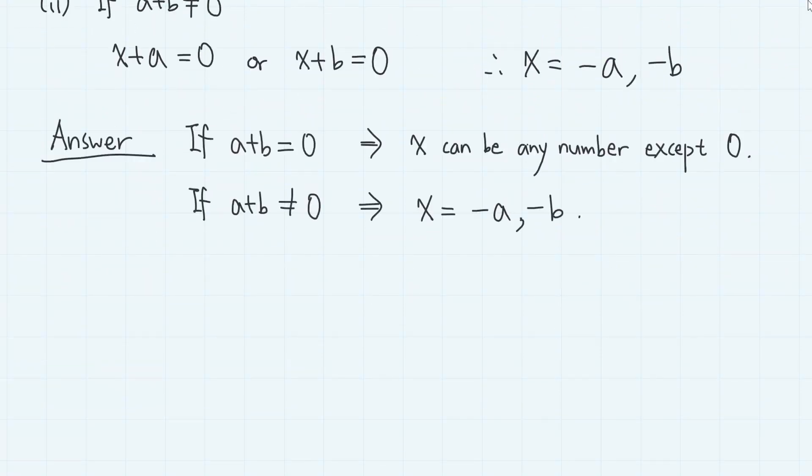To summarize, if a plus b equals 0, then x can be any number except 0. And if a plus b is non-zero, then the roots are minus a and minus b.